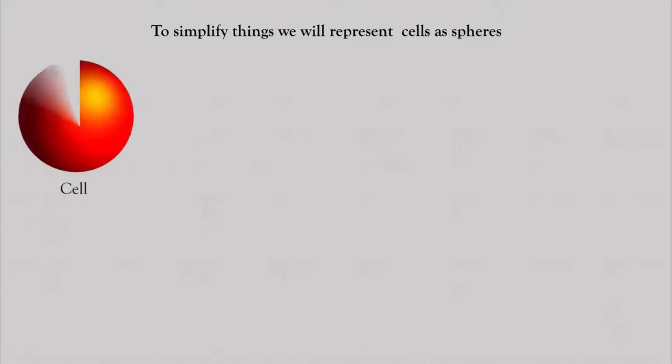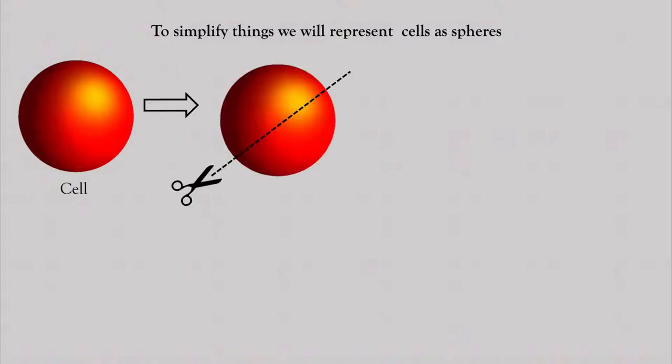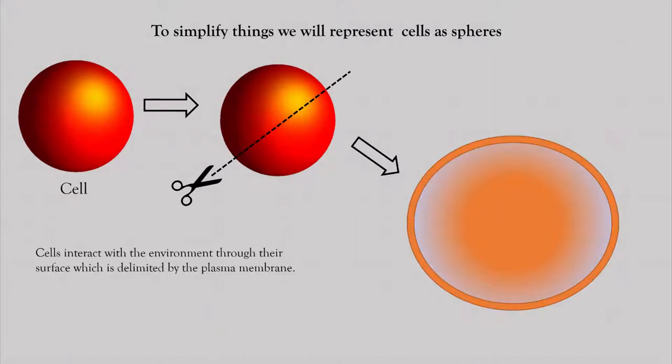A spherical cell can be cut in half to visualize the inside. If we look from the side of the cell, we will see that the cell is surrounded by a plasma membrane, and this plasma membrane delimits the volume of the cell.